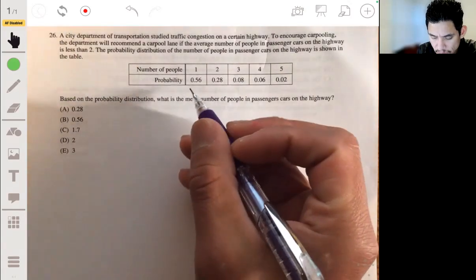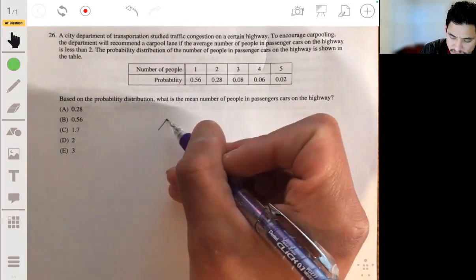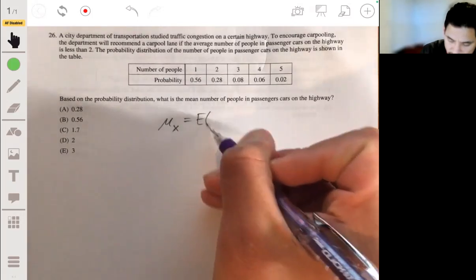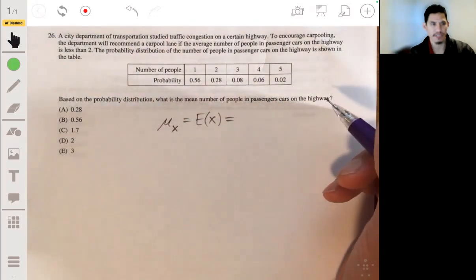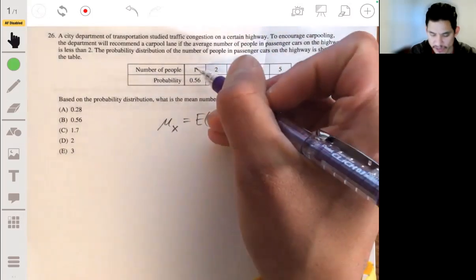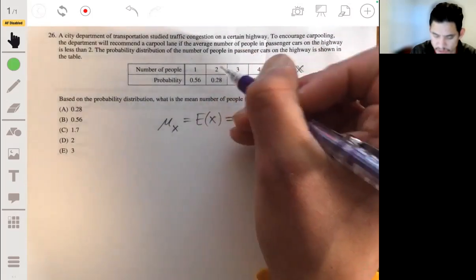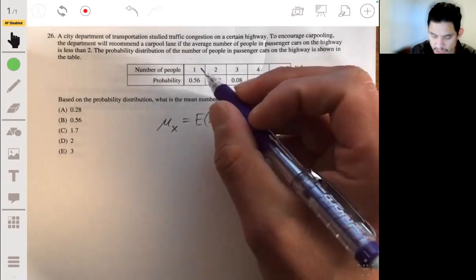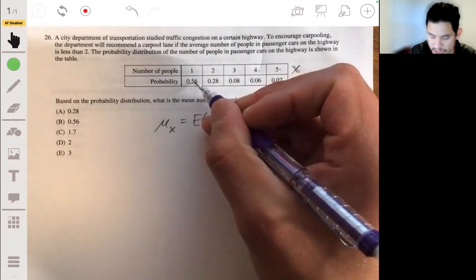Okay, so this is basically an example of a random variable. We want to essentially find the mean or the expected value of this random variable, and we'll just call it x. That's essentially the weighted average of each of the individual x values. So these are the possible values for x: one, two, three, four, five. And what this equation says is that you take that value and you multiply it by its corresponding probability.